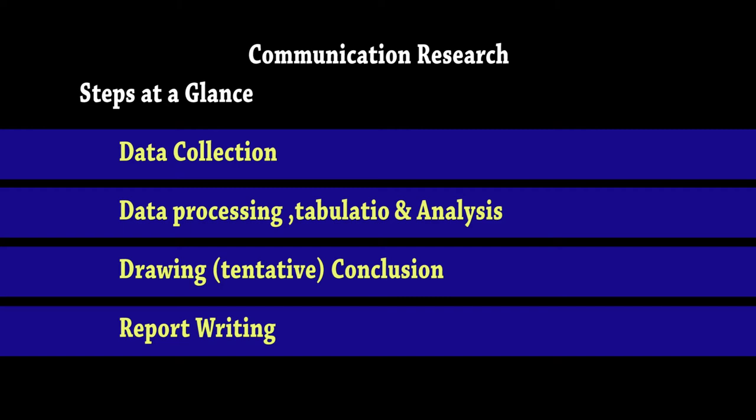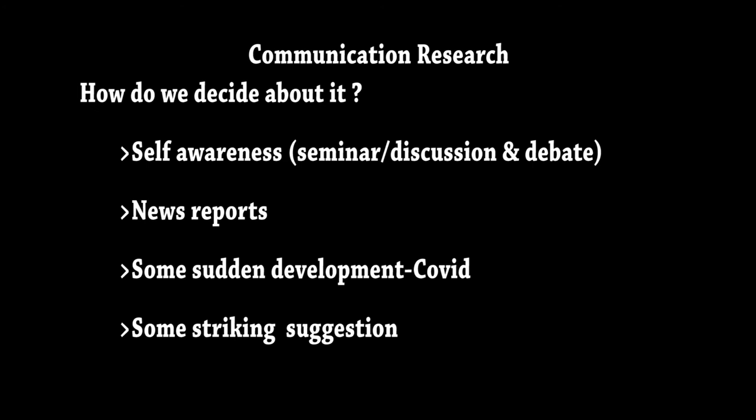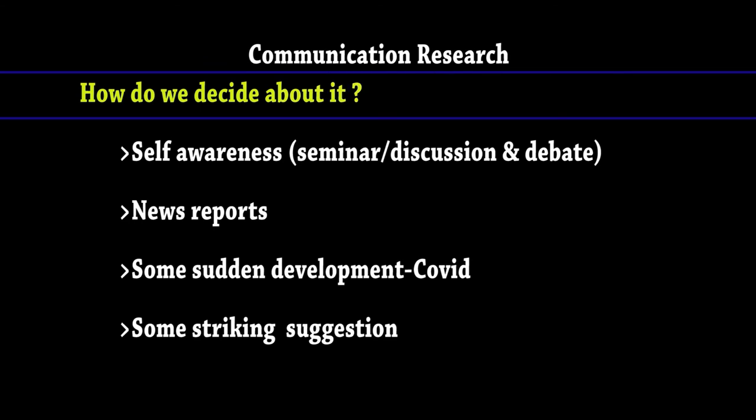The first step is identification of research problem. What is a research problem to begin with? Research problem is nothing but the topic of the research — it is the subject under study, the issue under study. Students should not get confused by this term. When somebody says 'what is the research problem,' they are talking about the topic of the research. The second important thing is: how do we decide on it? There are several factors that help us in taking a decision on this.